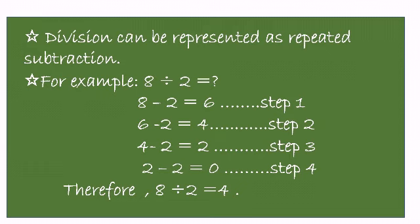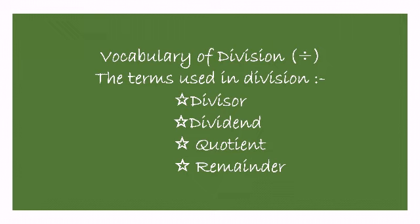We subtract 2 from 8: the first step gives 6, then 6 minus 2 gives 4, then 4 minus 2 gives 2, then 2 minus 2 gives 0. In 4 steps we are done, so the answer is 4 because 4 steps are involved.